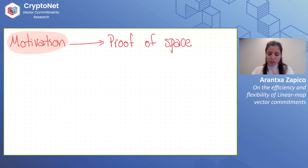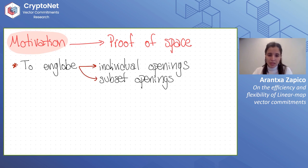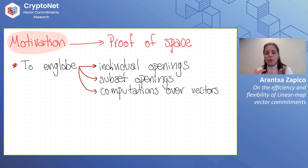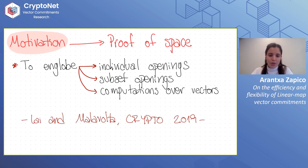To start with, we need to find our definition and framework. We would like a definition that encompasses individual openings, subset openings, but we also want to be able to perform some computation on the committed data — we want functional vector commitments, able to perform computations on the vectors inside the commitments. For this, we choose the framework of Laya-Malavolta linear map commitments presented in their 2019 work.